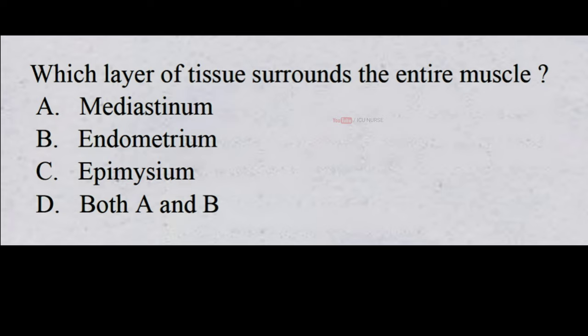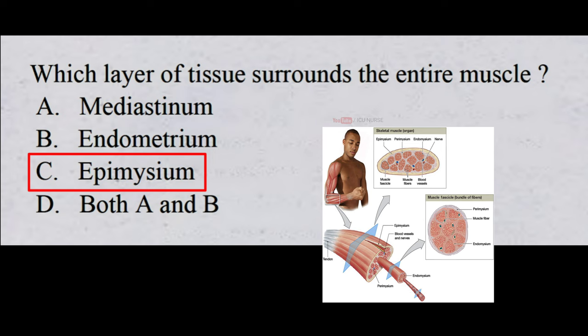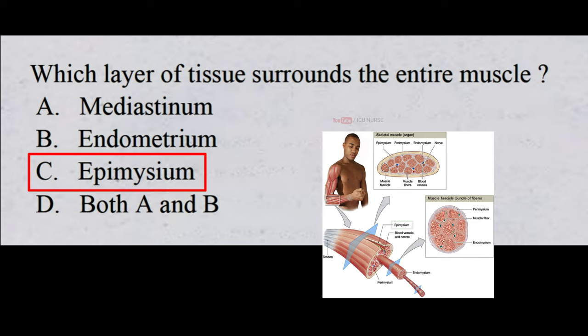Which layer of tissue surrounds the entire muscle? A. Mediastinum. B. Endometrium. C. Epimysium. D. Both A and B. And the correct answer is C. Epimysium. The epimysium is the dense connective tissue that surrounds the entire muscle tissue.